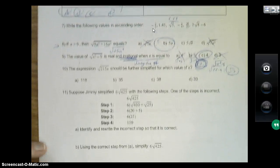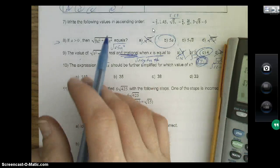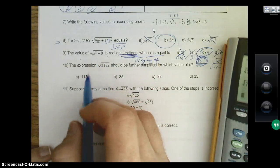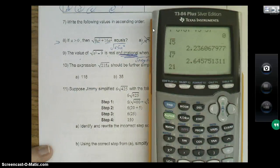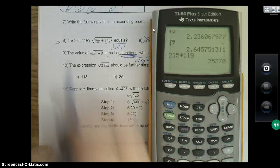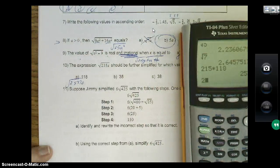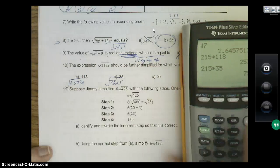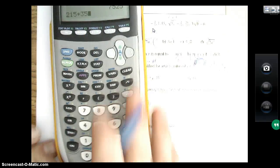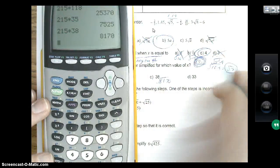The expression square root of 215x should be further simplified for which value of x. Basically all these A, B, C, D's, you're going to plug them in and see what your outcome is. So meaning square root of 215 times x, I'm going to put 118 in for x, so 215 times 118, 25,370. Now I really recommend just going through all these: 215 times 35, 7,525. If I do 38, 8,170. And then I'll do 33, 7,095.